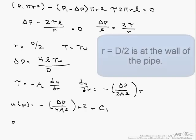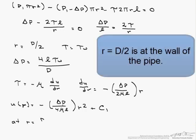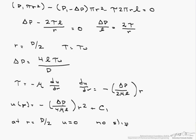So instead, what we say is at r equals d over 2, u equals 0. And that's because of the no slip condition.